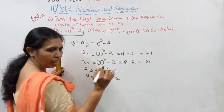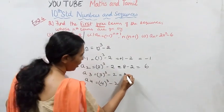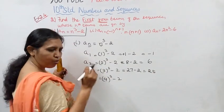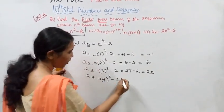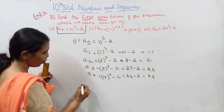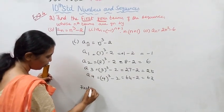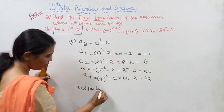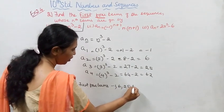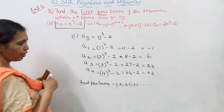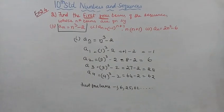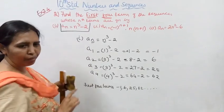a_3 equals 3 cube: 3 into 3 into 3 equals 27, minus 2 equals 25. a_4 equals 4 cube: 4 times 4 equals 16, 16 times 4 equals 64, minus 2 equals 62.